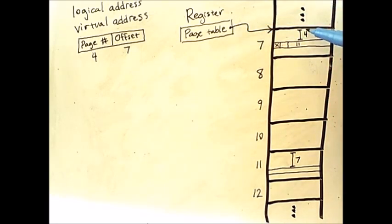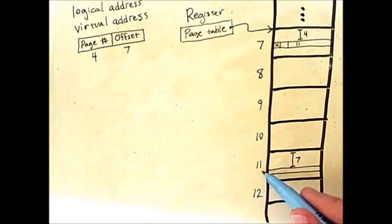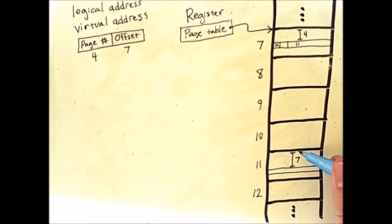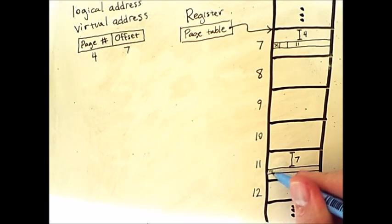That means we're essentially moving 4 units down from that base to get an entry in the page table. For example, I've drawn an entry here, and this entry contains an 11 in very small writing. In other words, we're going to go to frame 11 to find the address we want. Frame 11 is down here. Our offset is 7, so I will move 7 units from the beginning of that frame to reach the memory address, the physical memory address that I'm looking for, designated by this line here.